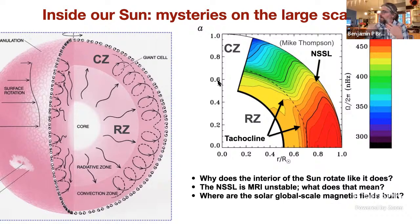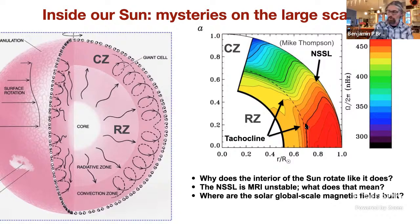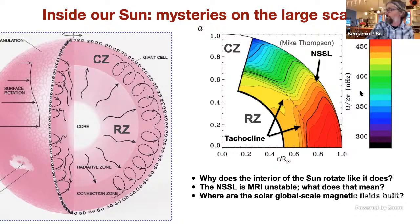Another interesting thing: the near surface shear layer of the sun actually ends up being unstable to the magnetorotational instability. The bigger question is where are the global-scale magnetic fields of the sun built? Are they built at the base of the convection zone in the tachycline — a very popular theory for 30 or 40 years? Are they maybe built in the bulk of the convection zone, an idea that's gotten some currency in the last decade? Or could they even be built and organized maybe just up in the surface layer, which is where we actually see all the dynamics happening anyway?